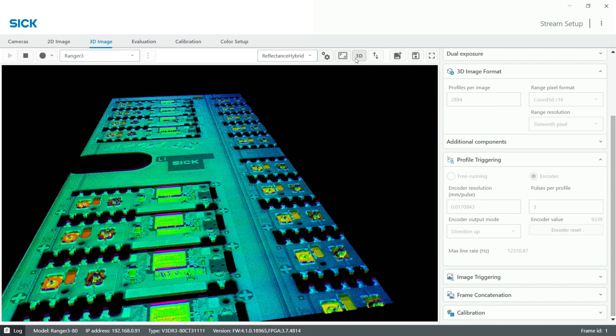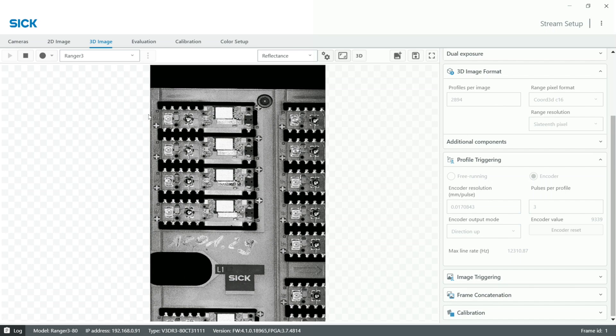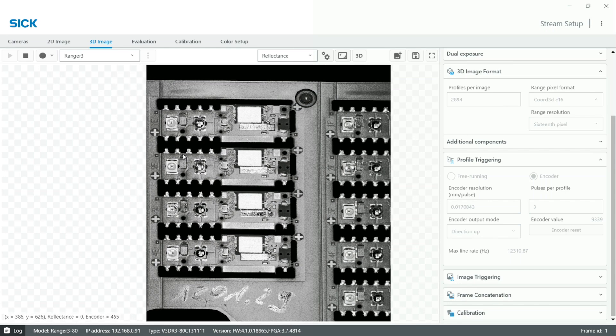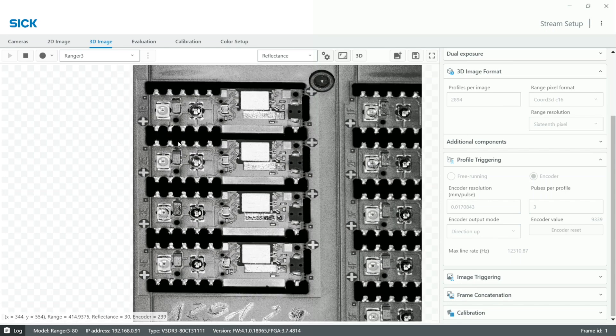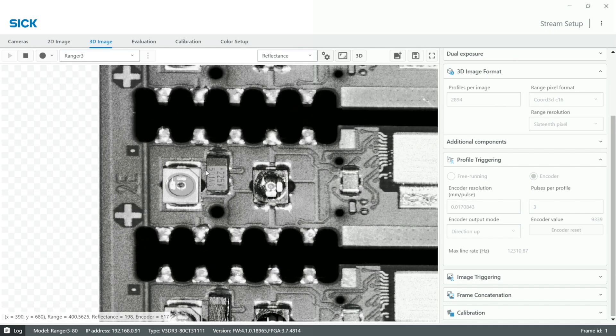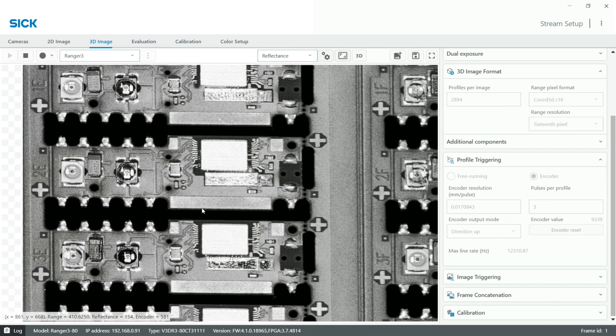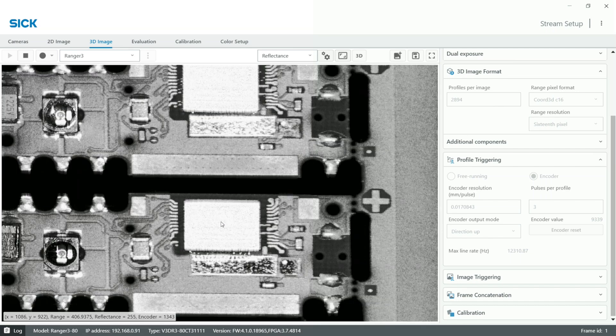However, if we look at the 2D reflectance image, we're not able to inspect the color of the components. We also have a pretty hard time reading these numbers and we cannot see other parts in finer detail.